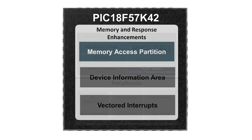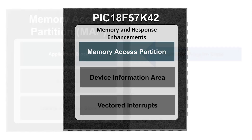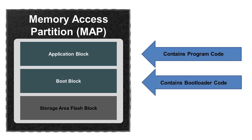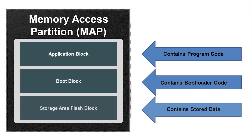The program flash memory is now partitioned into three sections called the MAP, or Memory Access Partition. This means that the flash memory is partitioned into multiple areas such as the application block, boot block, and storage area flash block.